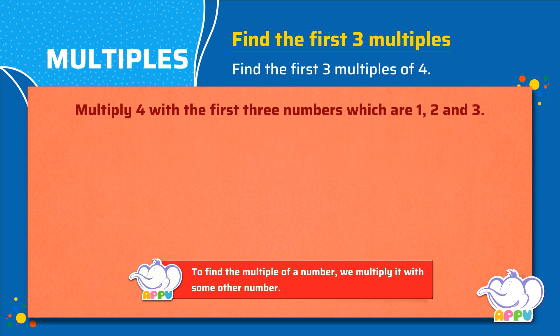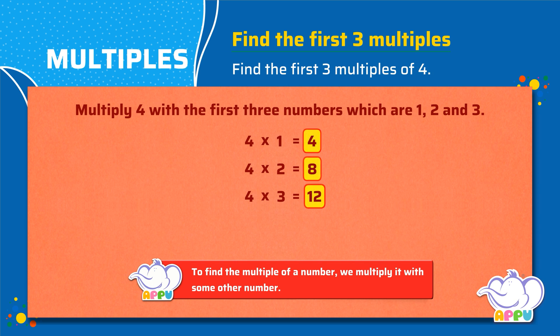The first multiple of 4 is 4 times 1 equals 4. The second multiple of 4 is 4 times 2 equals 8. The third multiple of 4 is 4 times 3 equals 12. So the first three multiples of 4 are 4, 8, and 12.